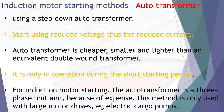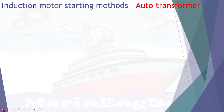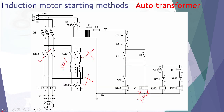One important caution: the timer relay is critical in this circuit. If the timer relay fails, the motor may continue running on the auto transformer indefinitely and eventually the transformer will burn out.